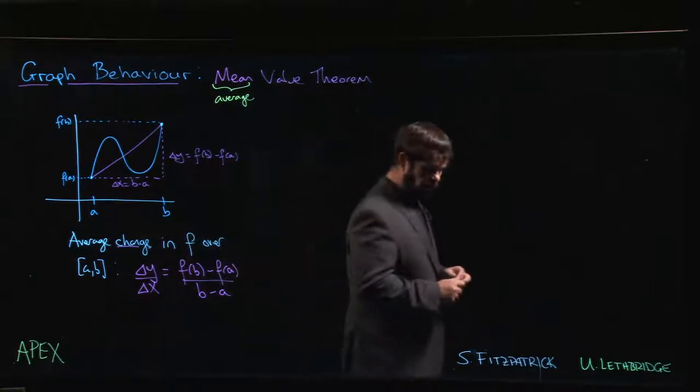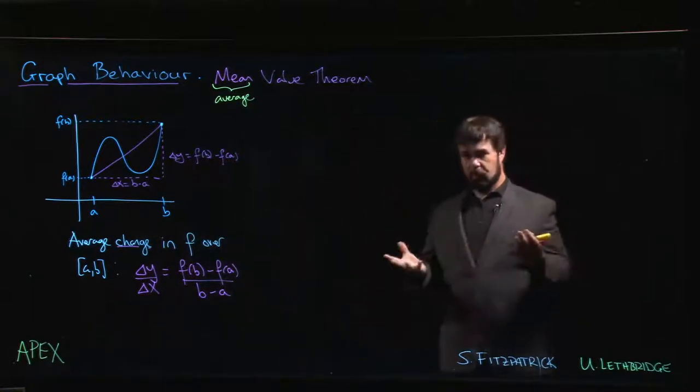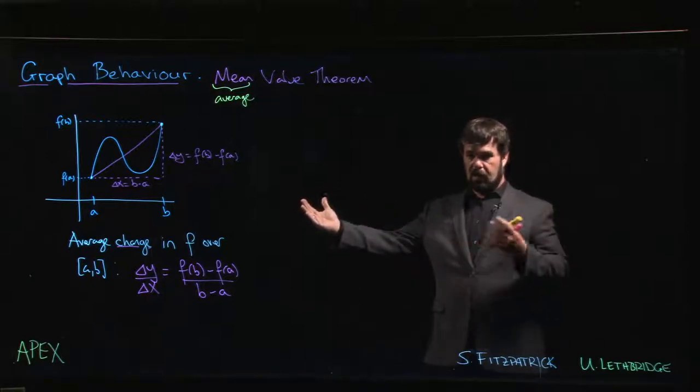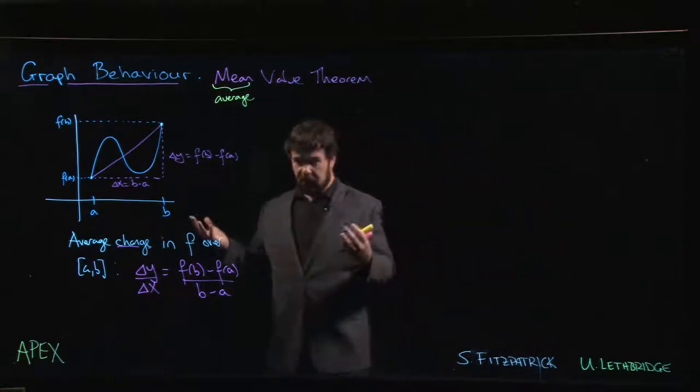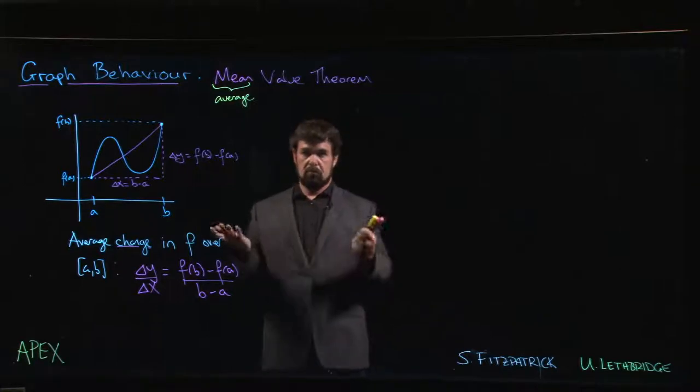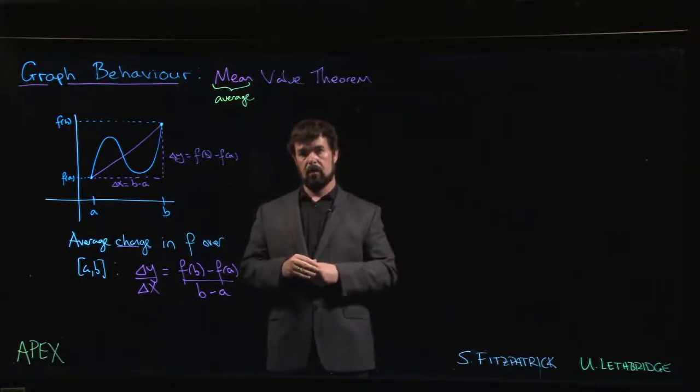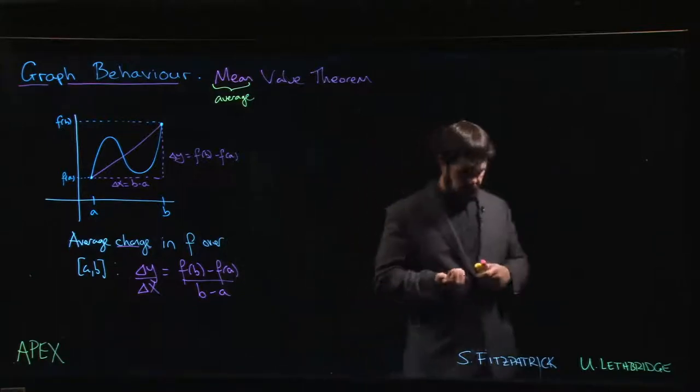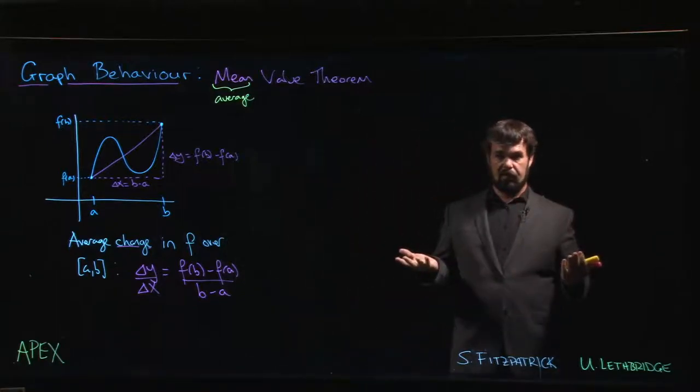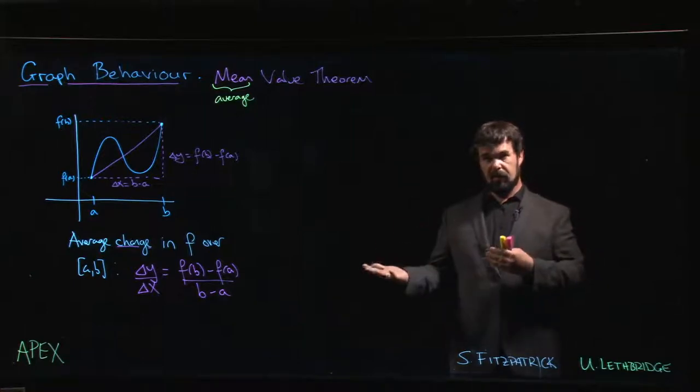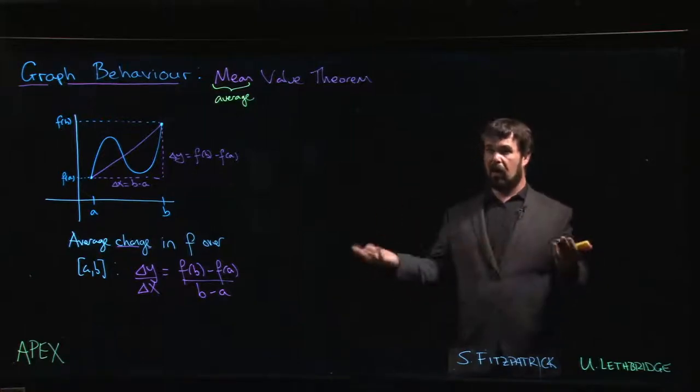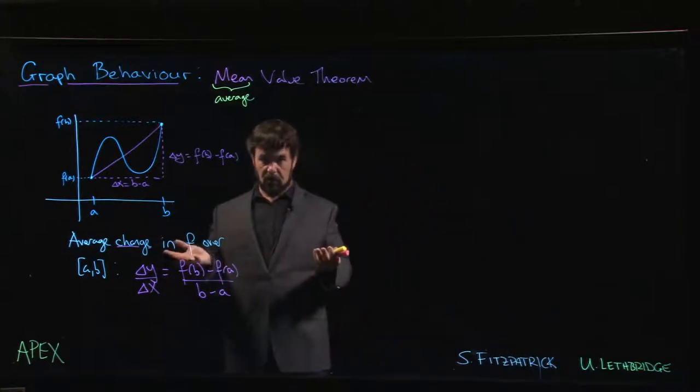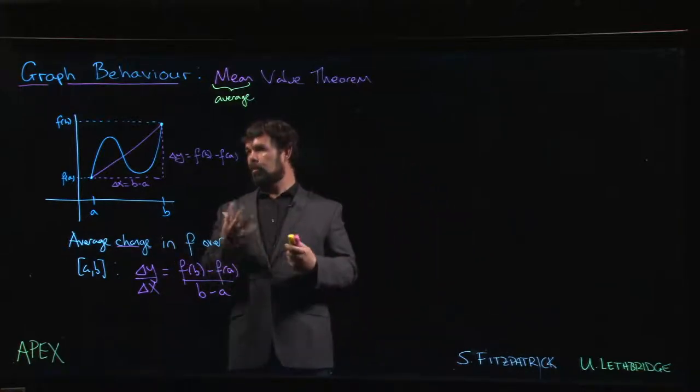The analogy that's usually given here is: you get in your car and drive from point A to point B. Let's say the trip is 50 kilometers and it takes you half an hour. Then you can say, 'I traveled 50 kilometers in half an hour. What was my average speed?' Well, if you did 50 kilometers in half an hour, you'd do 100 kilometers in one hour, so your average speed must have been 100 kilometers per hour.